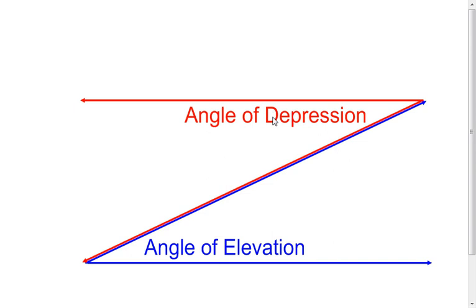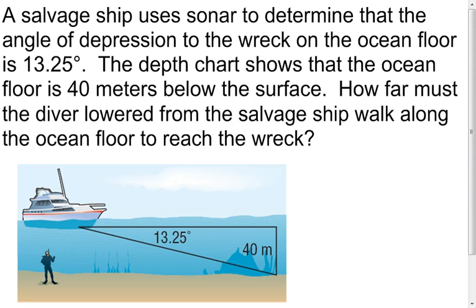Now, what I want you to realize is I have a line up here and a line down here — horizontal — so they're parallel. I have two parallel lines cut by a transversal. My transversal would be the red and blue together. I have a pair of alternate interior angles here. And we remember that when parallel lines are cut by a transversal, the alternate interior angles are congruent, which tells us the angle of elevation and the angle of depression will be congruent. Sometimes it's more of an advantage to solve for the other one.